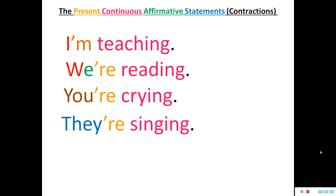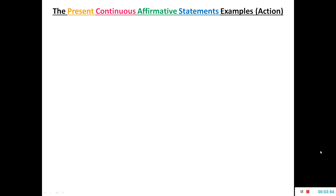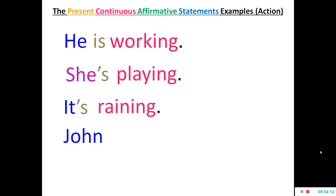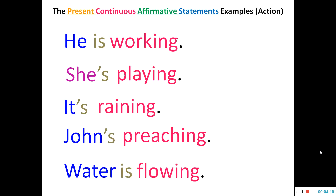Now let us see some examples with third person singular number subjects. With 'he' we use 'is' and then a V4 — 'He is working.' Again: 'She is playing.' And then: 'It is raining.' 'John's preaching.' 'Water is flowing.' So with third person singular subjects we use is + V4.